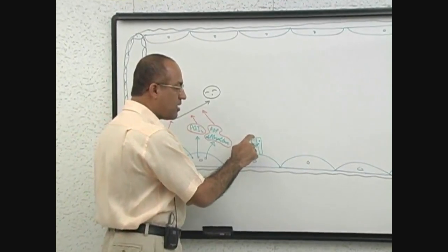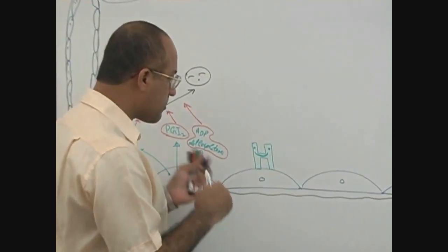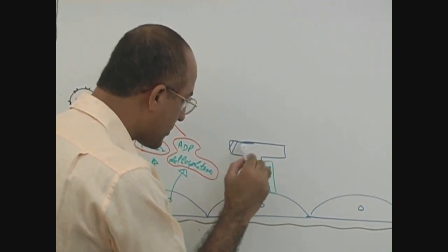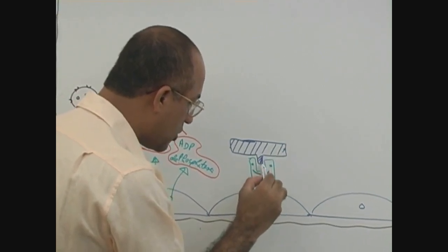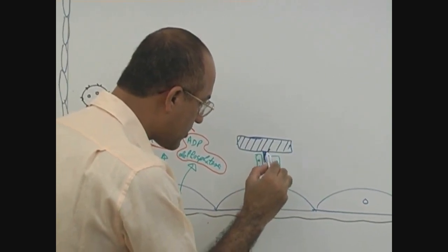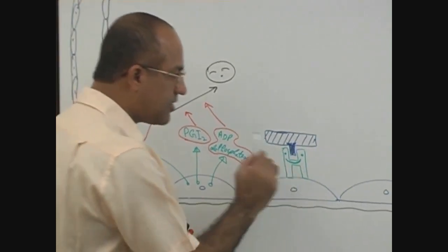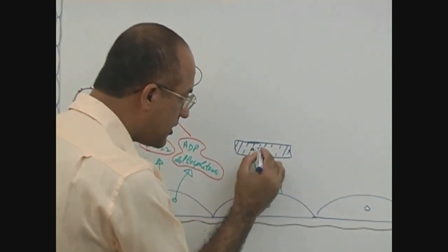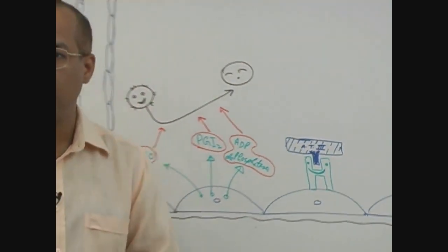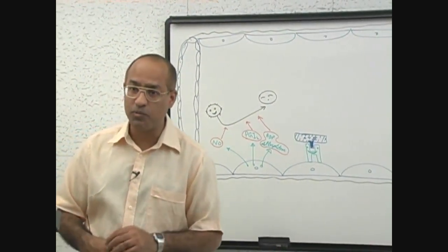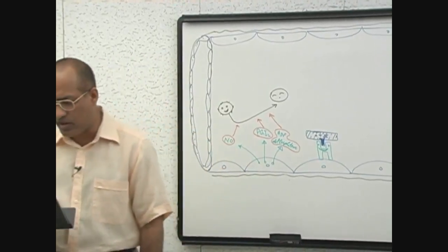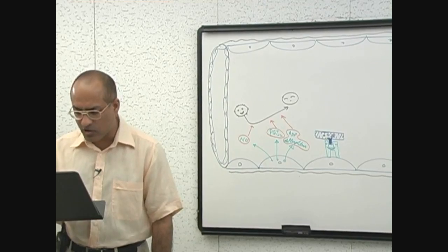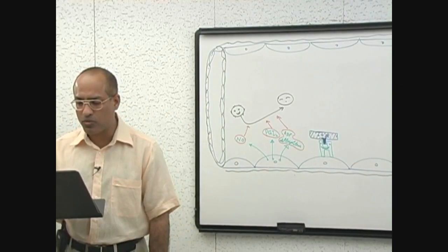Heparan sulfate is a molecule on which a special type of platform can sit. This special molecule which can hook on heparan sulfate is called antithrombin-3. This molecule is produced by the liver and is present in your blood. Antithrombin-3 sticks on the surface of heparan sulfate or heparin-like molecules, and when it does so, antithrombin-3 becomes active.